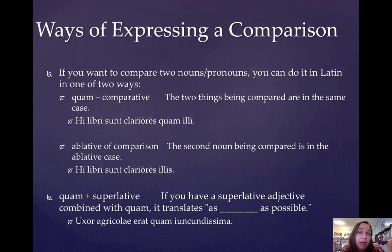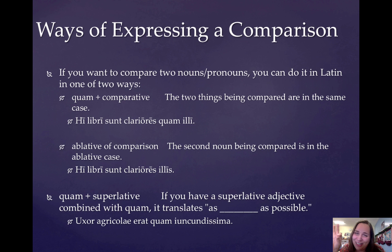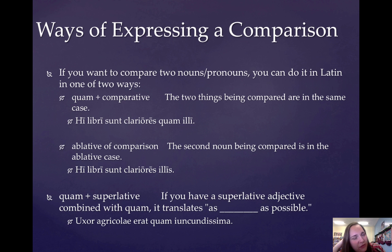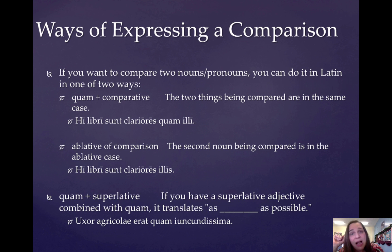That's how you form the comparative and the superlative for most adjectives. Now, like all languages, there are exceptions to this, and there are exceptions for how to form some adjectives in the comparative and the superlative. We're going to be learning those over the next couple of chapters. You are going to learn the exceptions eventually, but this is the regular rule before we learn all the other ways.